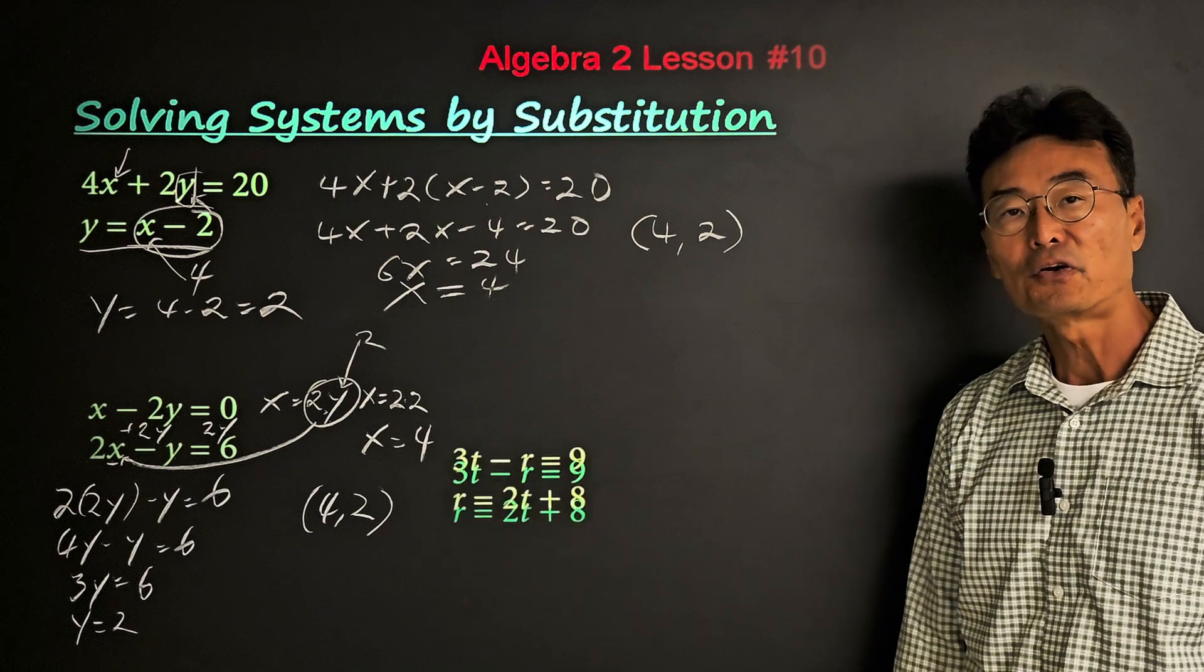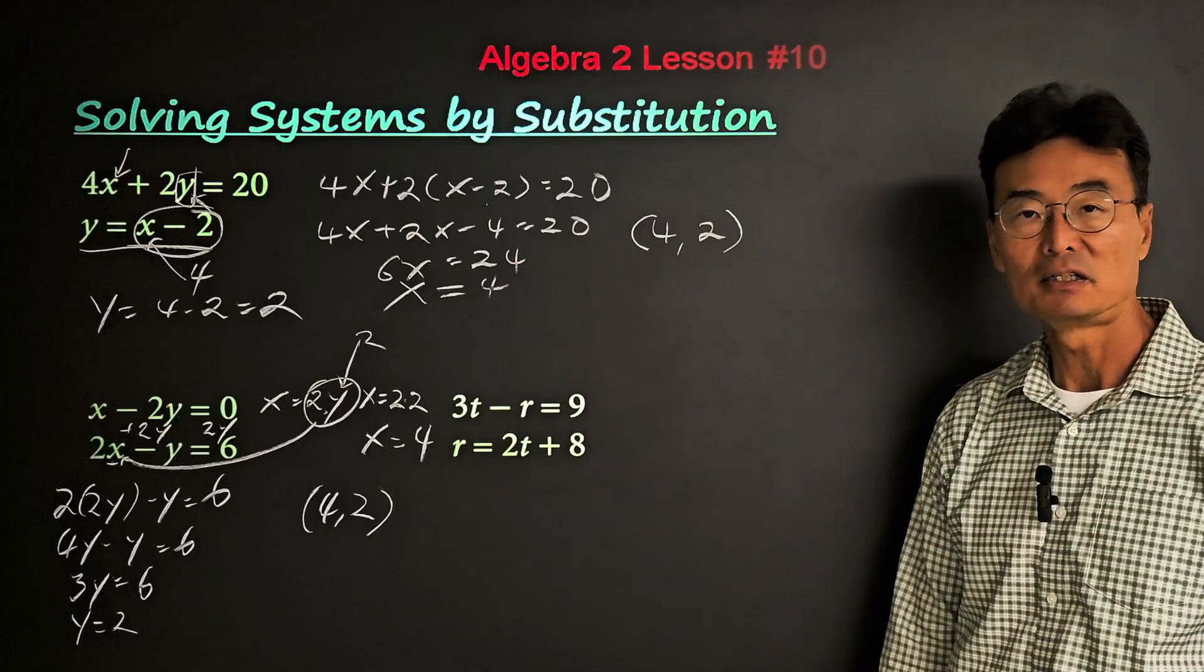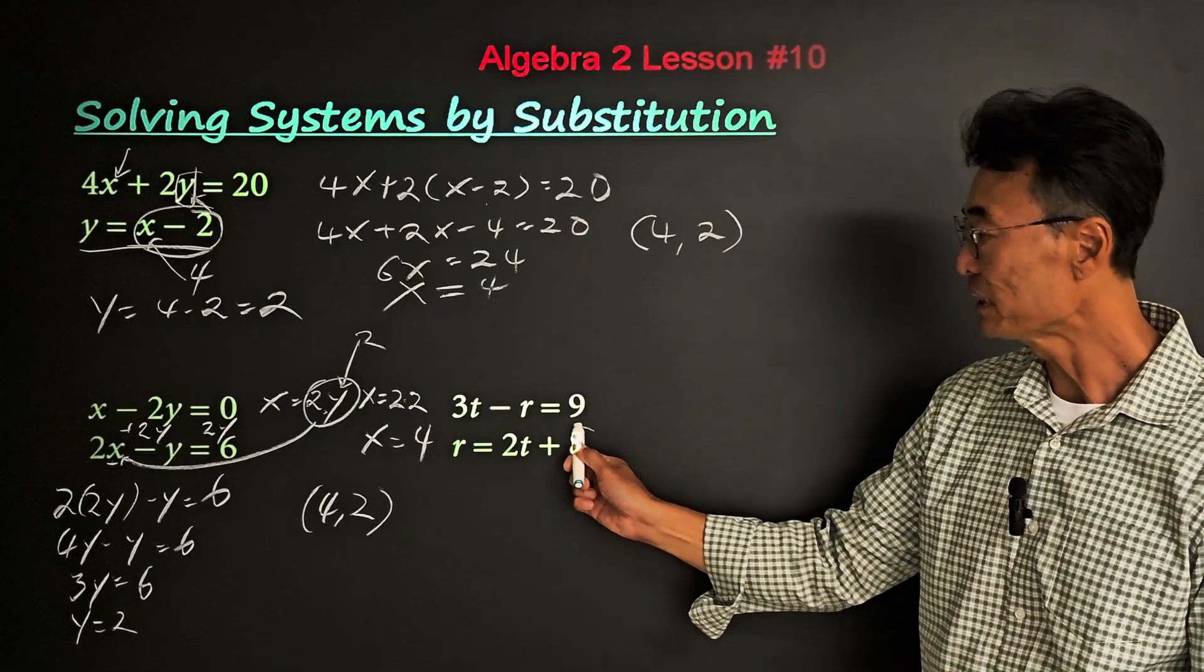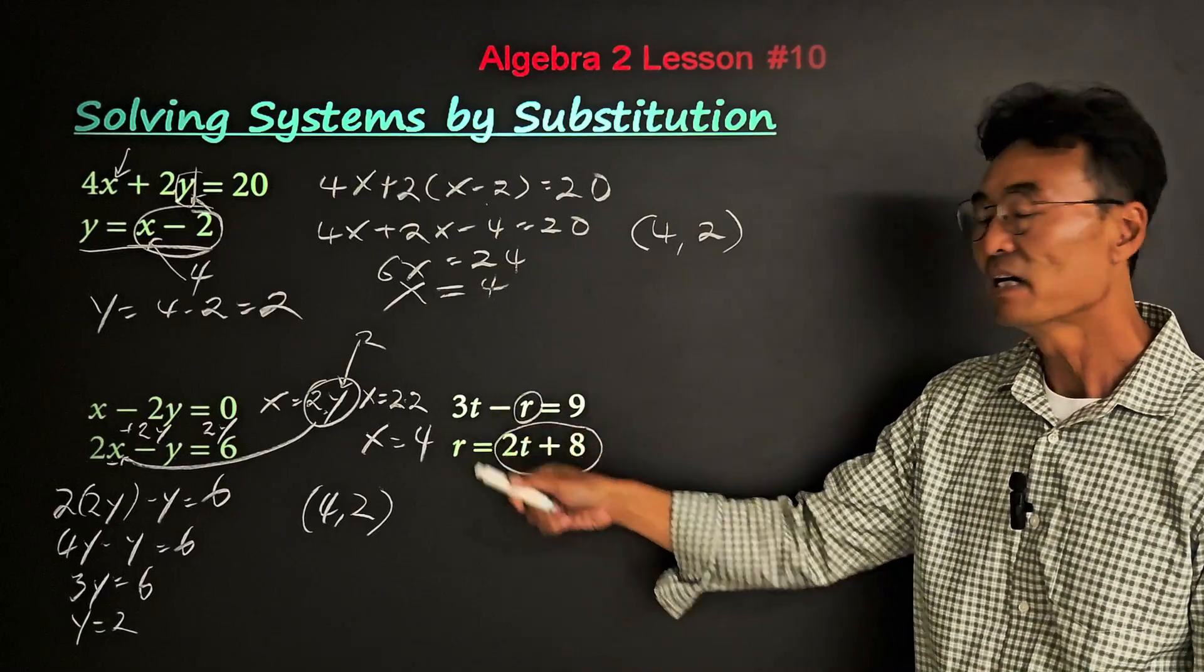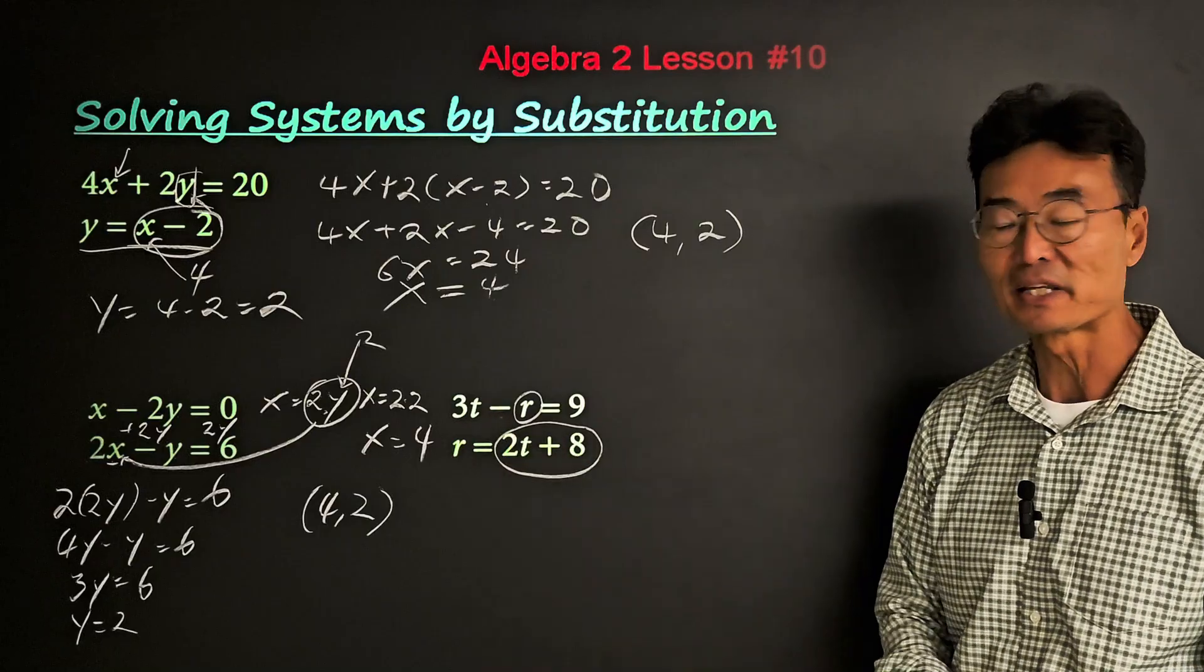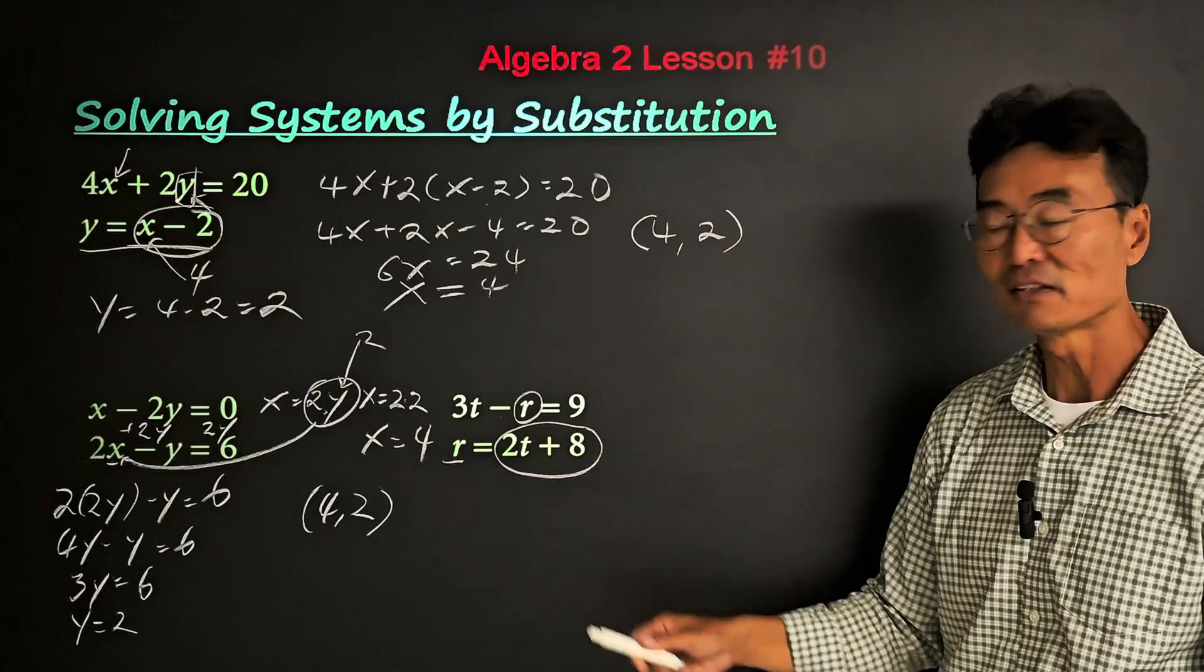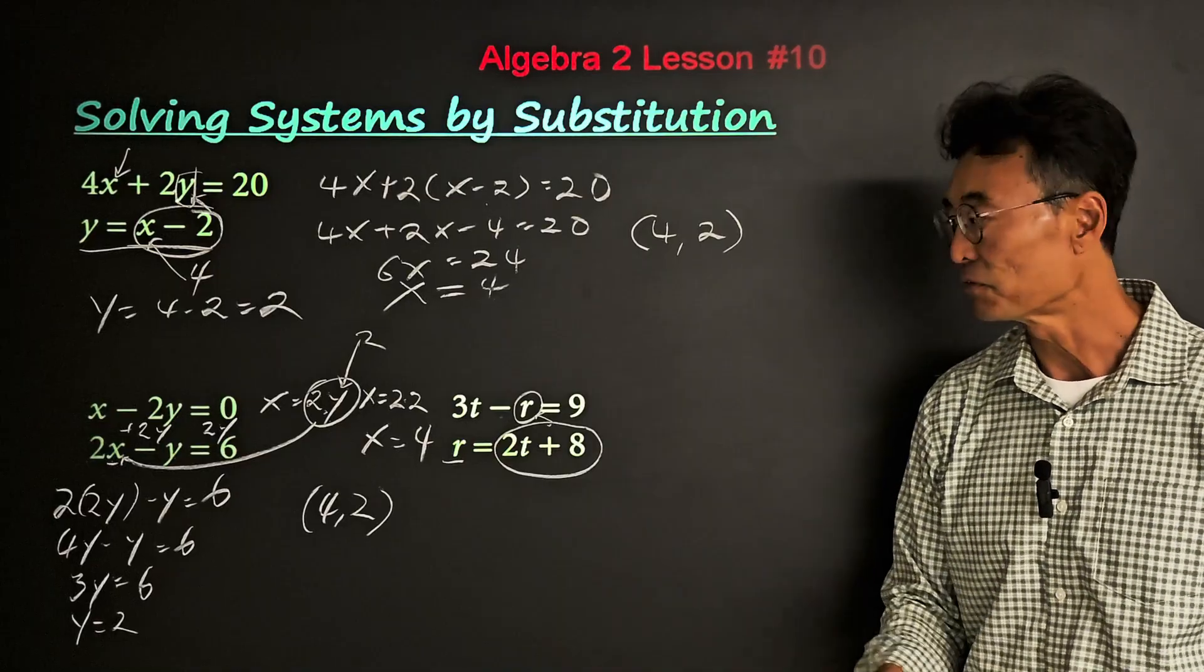In our third and final example, we have 3t minus r equals 9, and the best way to do this is just simply take that 2t plus 8 which equals r and replace that r. However, what's important is that notice we have a negative right there. So when we take the 2t plus 8 which equals r and substitute in for the value of r, we have to be careful.